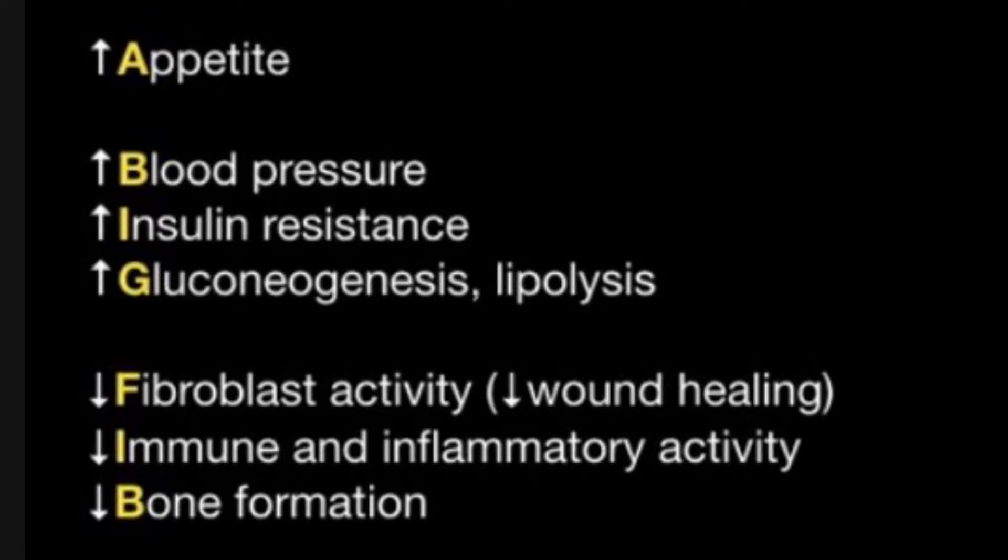A big fib stands for: A stands for increase in appetite, B for increase in blood pressure, I for increase in insulin resistance, G for increase in gluconeogenesis and lipolysis, F for decrease in fibroblast activity, which is decrease in wound healing, I for decrease in immune and inflammatory activity, and B for decrease in bone formation.